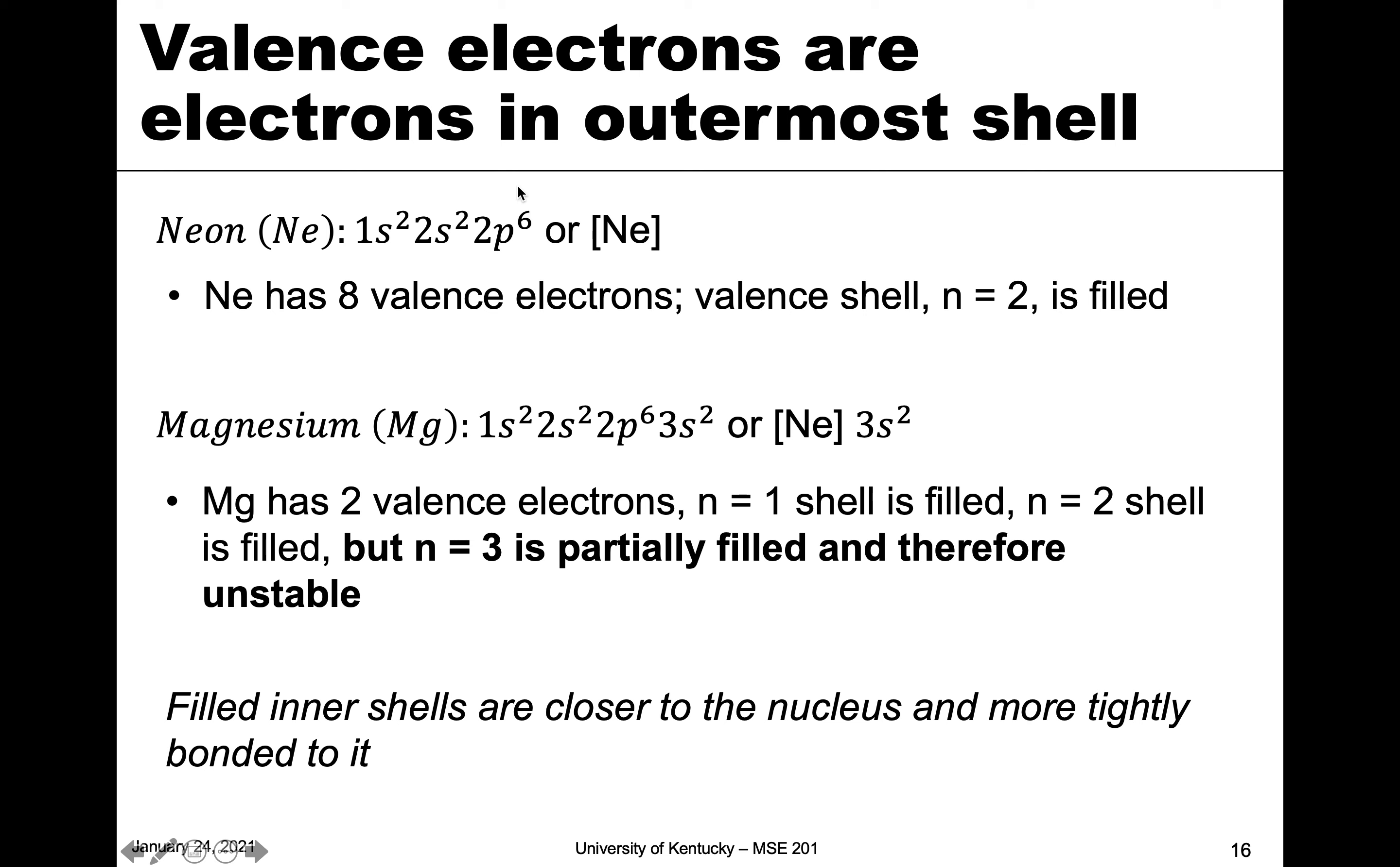The outermost is the two, and there are only S and P subshells in that shell. That is completely full because the S and P would combine to have eight. So the valence electrons are these outermost in the two, and there are eight of them.